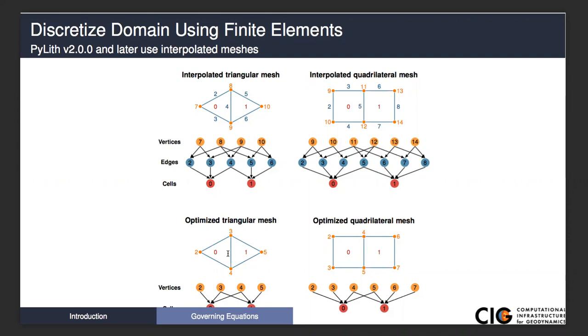There is an inherent topology associated with these finite elements. In finite difference, you have a grid that is logically rectangular, and it's very easy to know who your neighbors are. In finite elements, we have unstructured grids, and you have to have an indexing scheme to keep track of which element or cell has which nodes and the coordinates of those nodes.